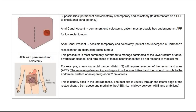Looking at some examples: the upper picture shows a stoma at the left iliac fossa. Two possibilities — it could be a permanent end colostomy or a temporary end colostomy. Perform a digital rectal exam to check anal canal patency. If the anal canal is absent, it is a permanent end colostomy, likely done as an APR for a low rectal tumor. If the anal canal is present, it is a possible temporary end colostomy, done as a Hartmann's resection for an obstructing rectal tumor.